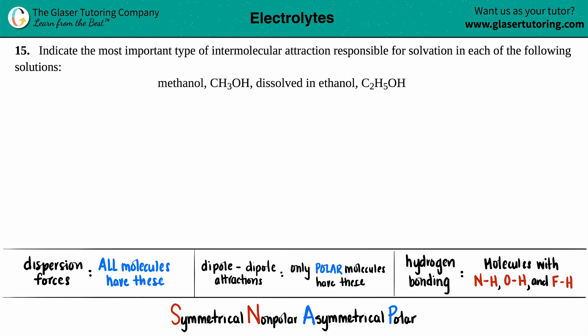Number 15, indicate the most important type of intermolecular attraction responsible for solvation in each of the following solutions. We have methanol, CH3OH, dissolved in ethanol, C2H5OH.